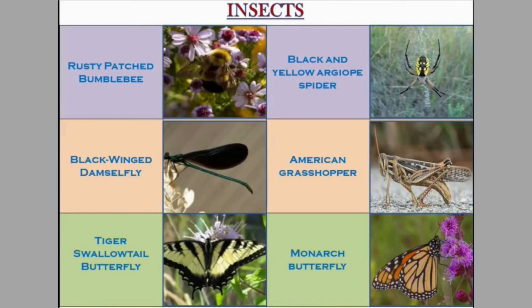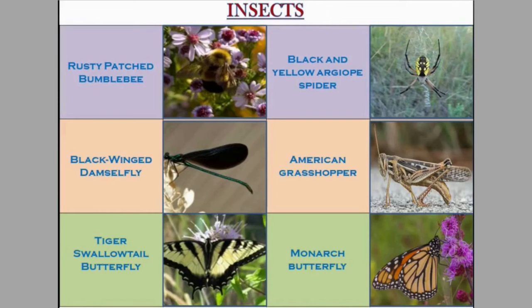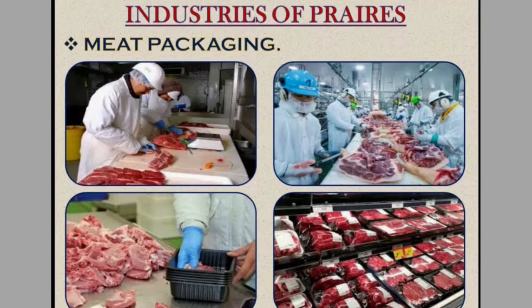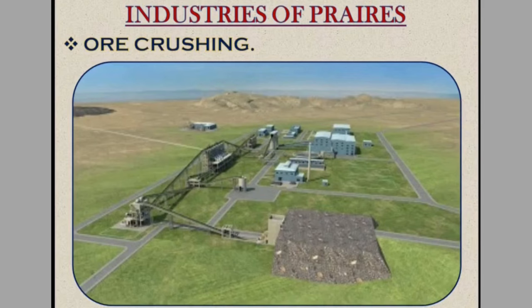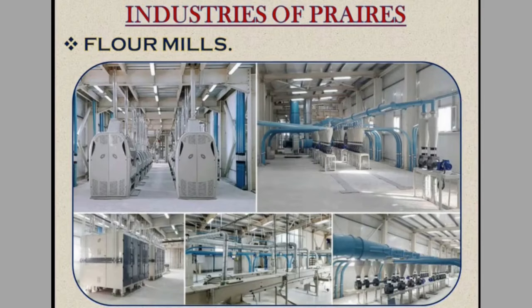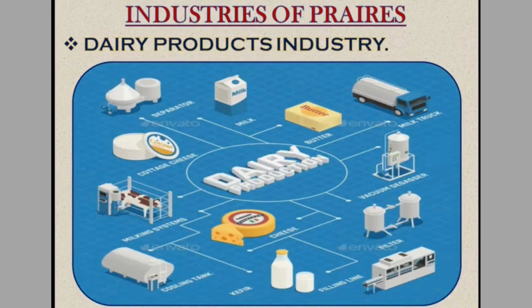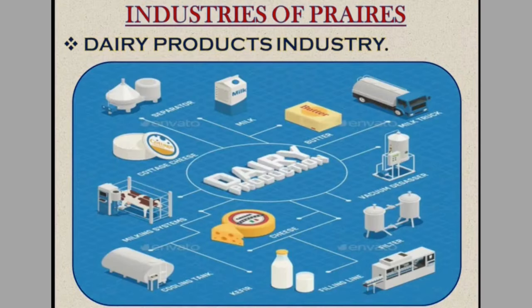Now let's have a look at the industries of prairies. The people of this region are very industrious. They are successfully harnessing technology to utilize its natural resources. The two most developed countries, the USA and Canada, are located in this region. The main industries of prairies are meat packaging, oil crushing, flour mills, oil extracting, dairy products industry, etc.